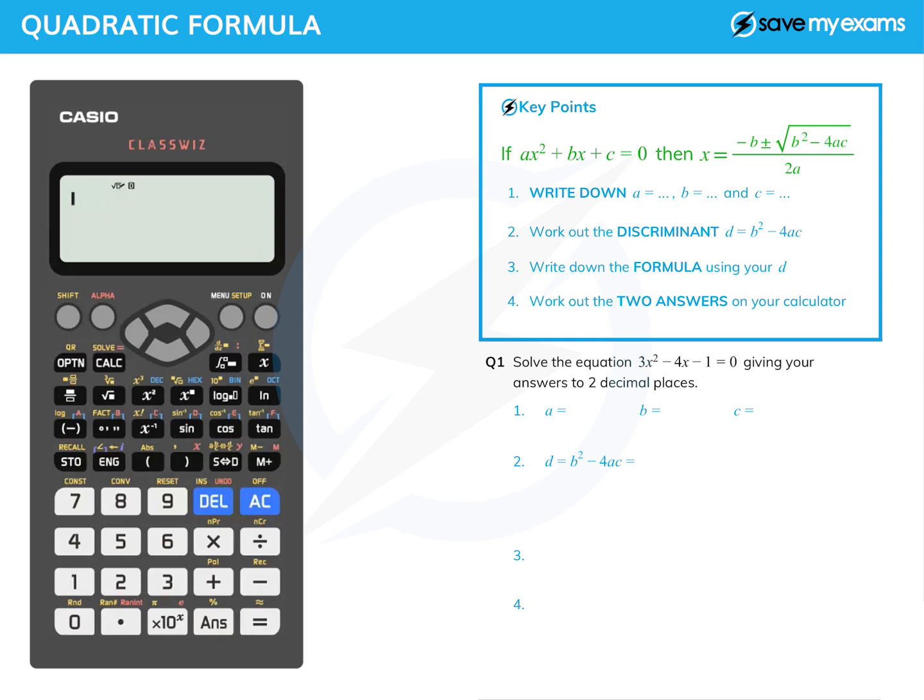First thing then, a is the coefficient, the number in front of x squared, so that's this 3 here. So we just write down 3.